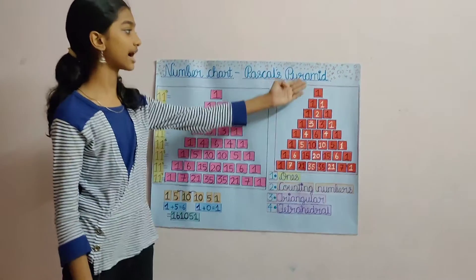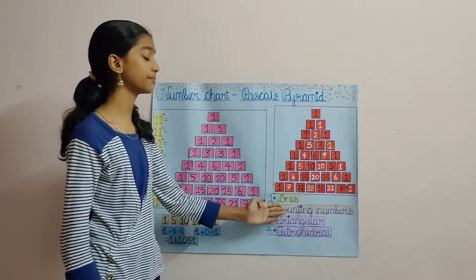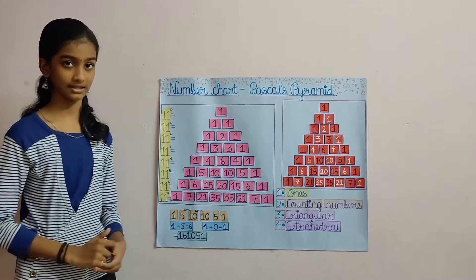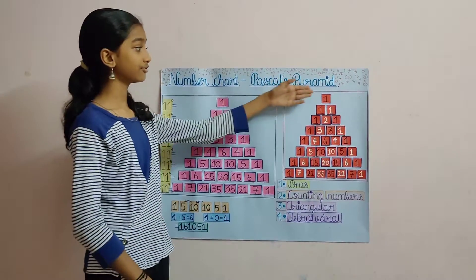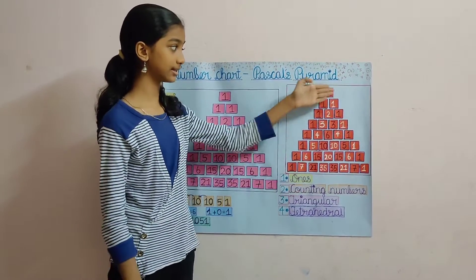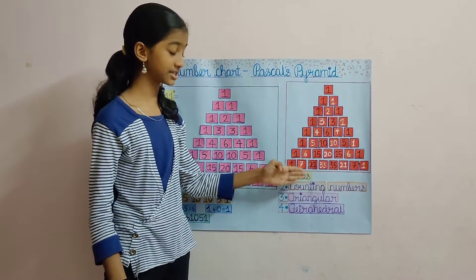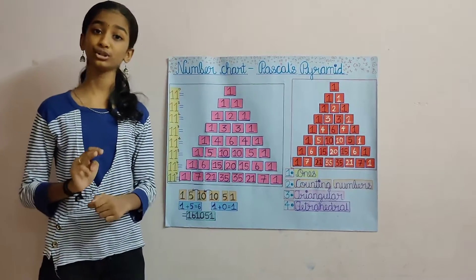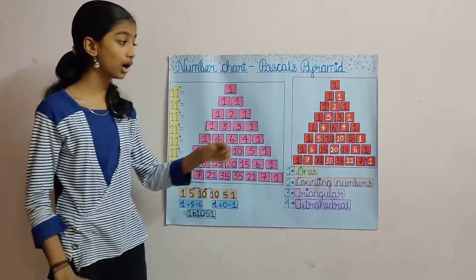Each diagonal of Pascal's Triangle also represents an interesting number pattern. The first diagonal represents the 1s and the second diagonal represents the counting numbers, that is 1, 2, 3 and so on.